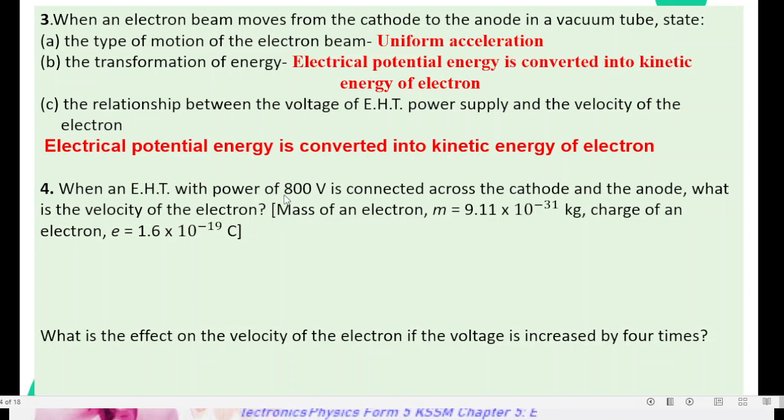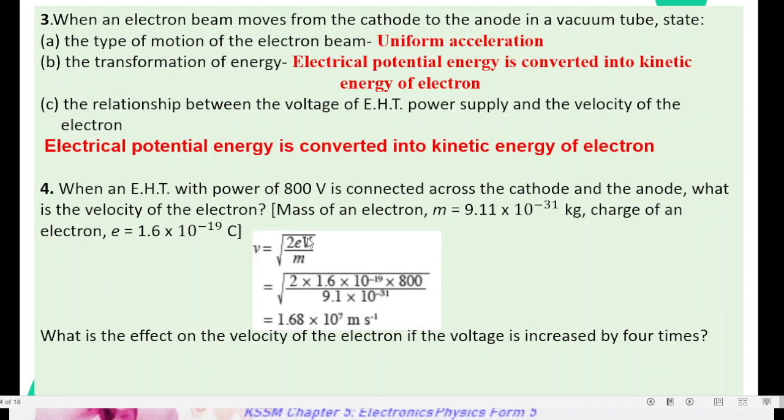So, from here, we can produce formula through this relationship, which is electrical potential energy equals to kinetic energy of an electron. The formula is V equals to square root of 2EV divided by M.